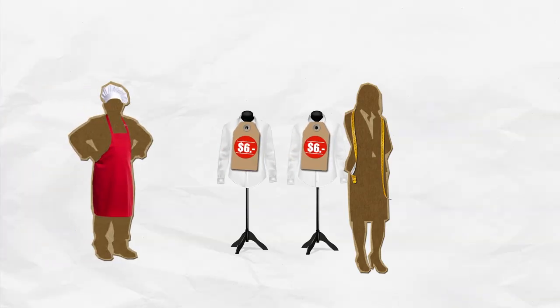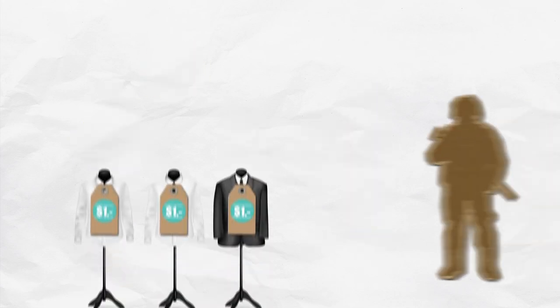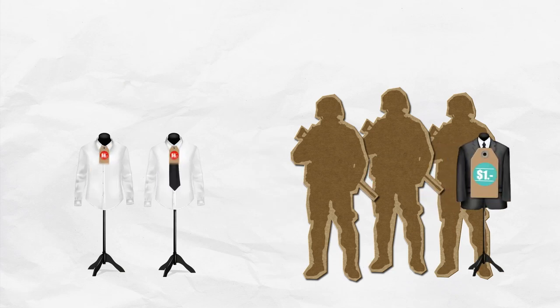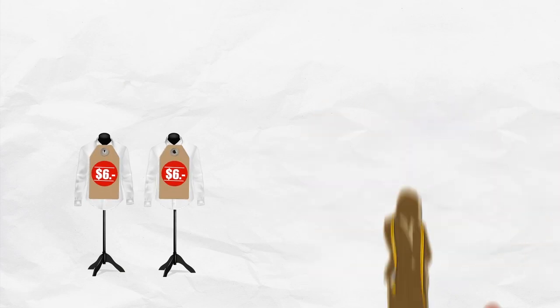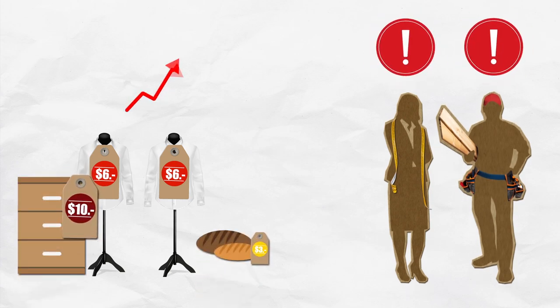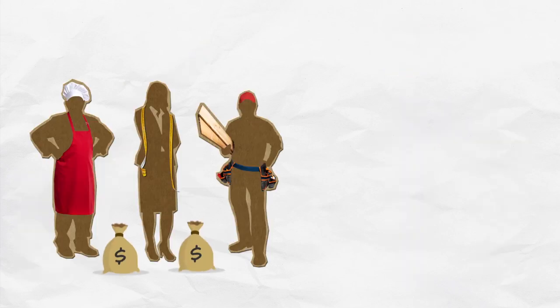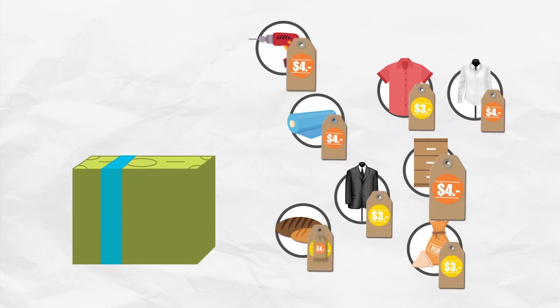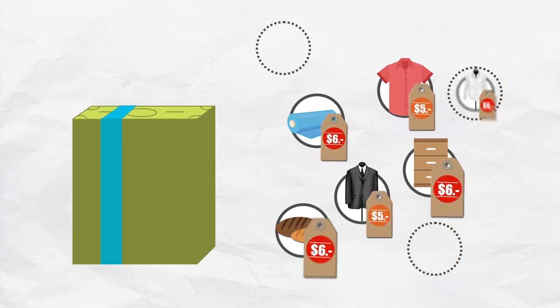When the baker arrives at the tailor to buy shirts, however, he finds that he's been fooled. The soldiers have bought shirts for themselves, and the price of shirts has now gone up. In the same way, the tailor and the carpenter discover that the prices of the goods they want to buy have also increased. Although they earned more dollars, their real wages — the amount of goods that the baker, the tailor, and the carpenter can buy with their dollars — have decreased.